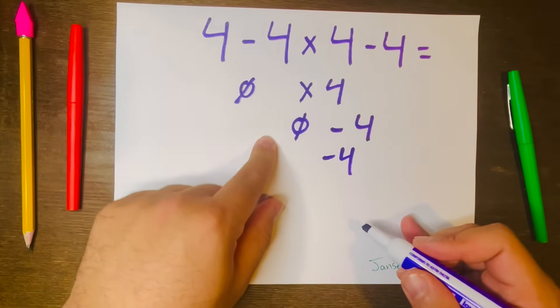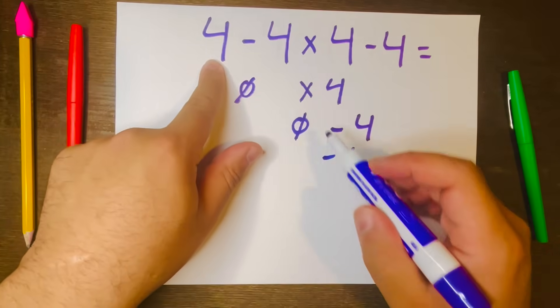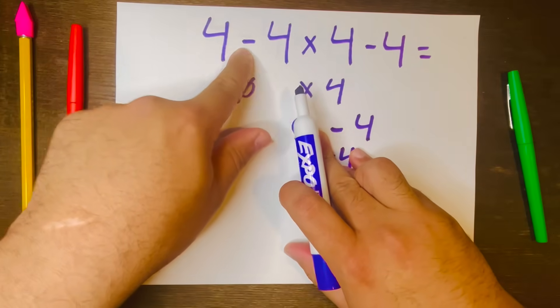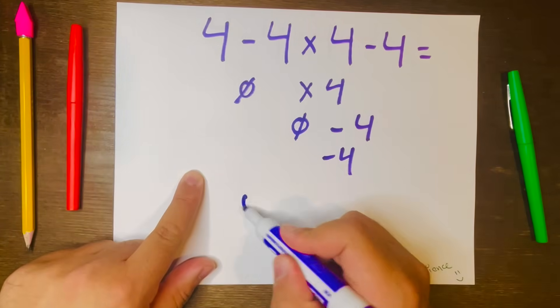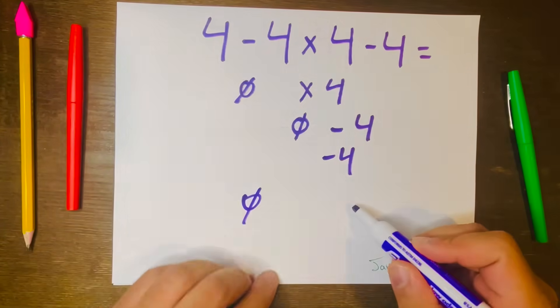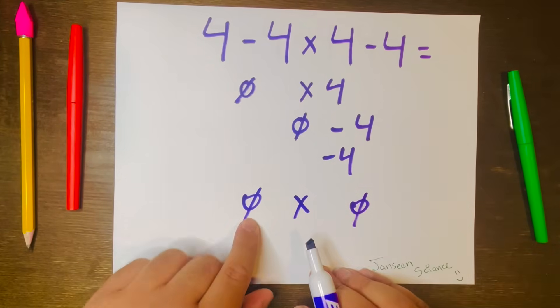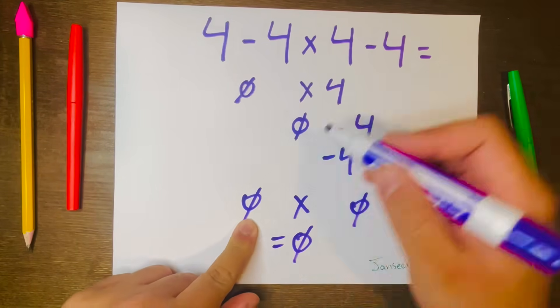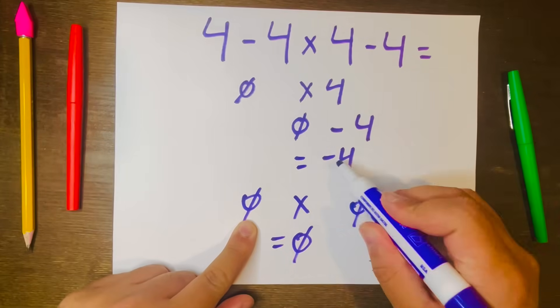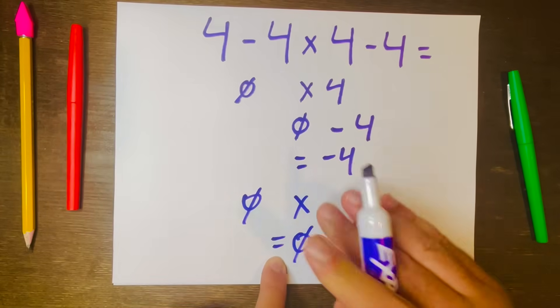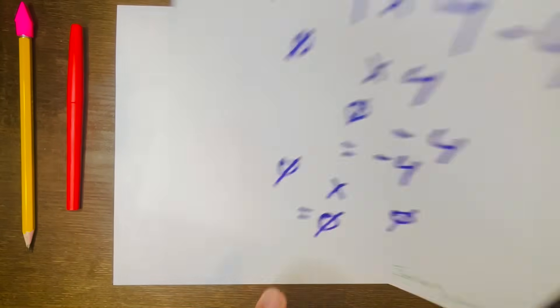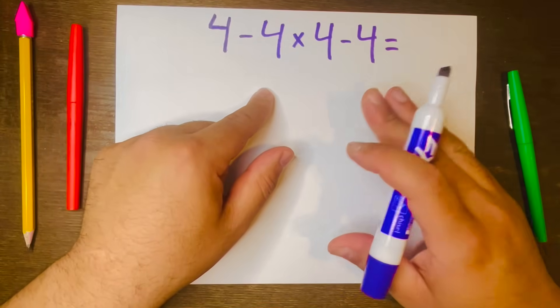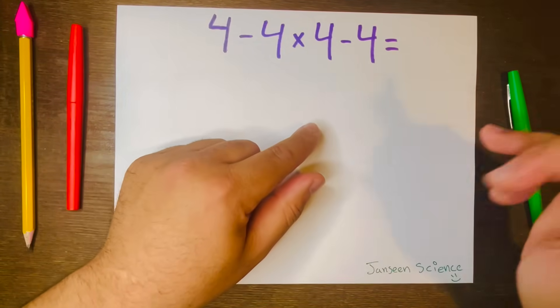This is wrong. Also, some people will do this part first: 4 minus 4, 0 times 4 minus 4, 0, and they multiply 0 times 0 and that's 0, and they think that's the answer, either negative 4 or 0. And that is wrong, and the reason why that is wrong is because they're not following the rules of order of operation.